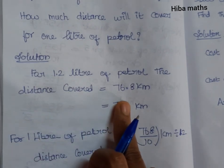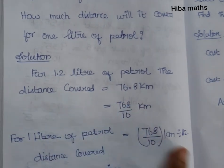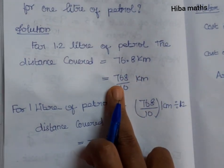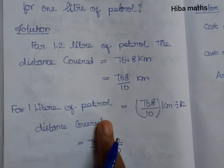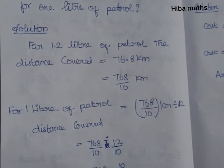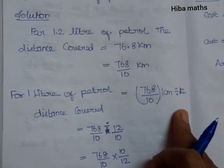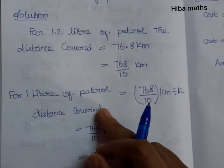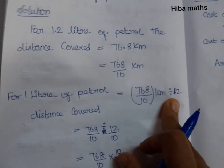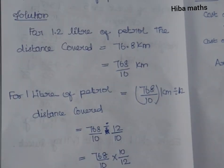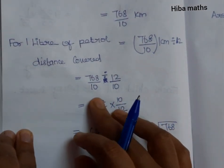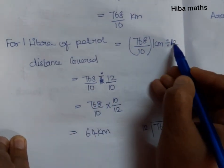The distance is 76.8 km. So what we do is divide by 10: 76.8 divided by 10 kilometers. For 1 liter, we divide by 1.2 liters. So for 1 liter of petrol, it is 76.8 divided by 10, that is divided by 1.2.